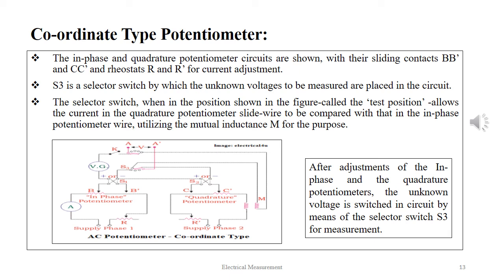The selector switch, when in the position shown in the figure called the test position, allows the current in the quadrature potentiometer slide wire to be compared with that in the in-phase potentiometer wire, utilizing the mutual inductance M for the purpose. After adjustments of the in-phase and the quadrature potentiometer, the unknown voltage is switched in circuit by means of the selector switch S3 for measurement.